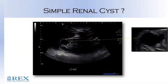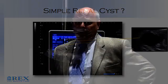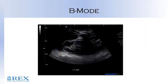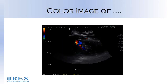This person's BUN is 50 and creatinine is 6, has endocarditis, and is 28 years old. When we look at the B-mode, it looks like a simple cyst, right? So I put color on and thought immediately — this looks like a pseudoaneurysm.